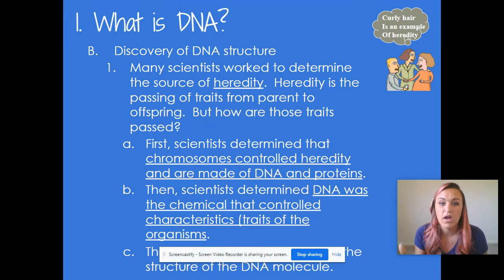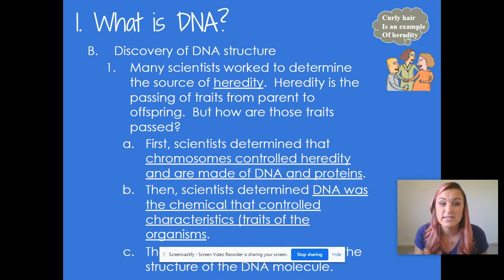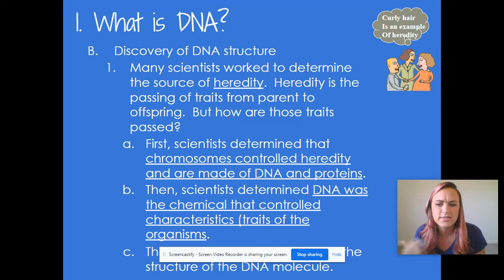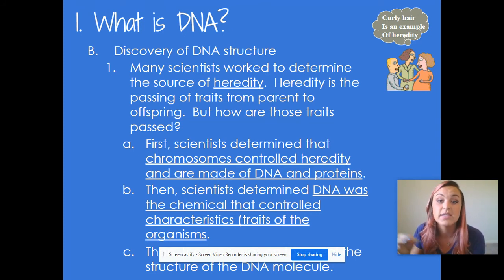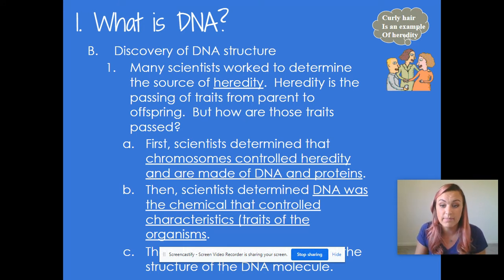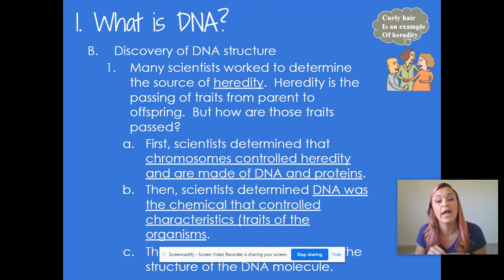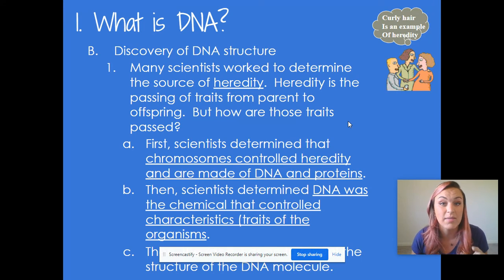When we're talking about DNA, we want to know how exactly it's built and what exactly it's made of. Many scientists worked to determine the source of heredity — they wanted to figure out things like why you have curly hair when your parents have straight hair. Heredity is basically defined as the passing of traits from parent to offspring. Scientists first determined that chromosomes controlled heredity and that chromosomes are made of DNA and proteins, and then they determined that DNA was the chemical that actually controlled the characteristics of organisms.